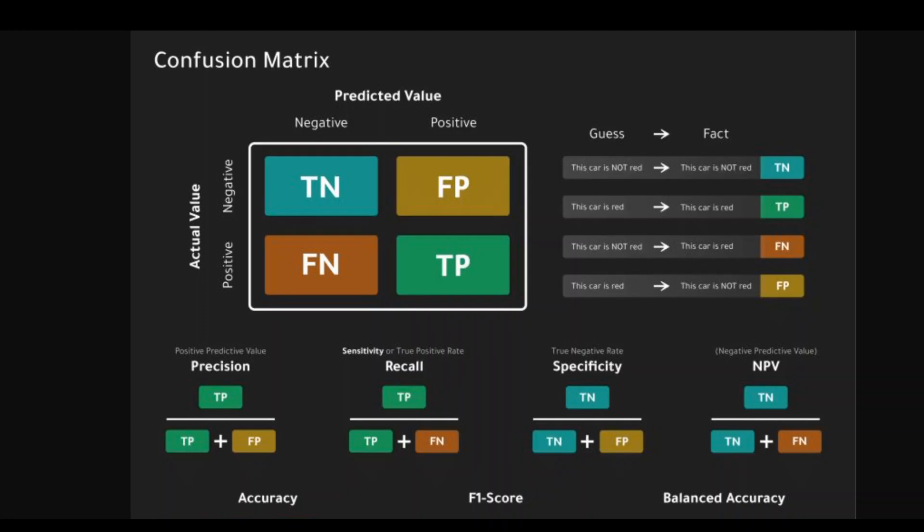In simple terms, accuracy tells us how often the model is correct. Precision tells us how often the model is correct when it predicts positive. Recall tells us how often the model correctly predicts positive out of all actual positives. An F1 score is a balanced measure that takes both precision and recall into account.